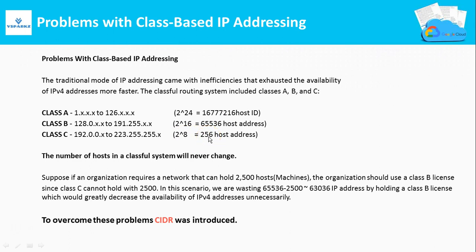For example, suppose an organization requires a network that can hold 2,500 hosts. The organization must use a Class B license because Class C can hold only 256 hosts. In this scenario we are wasting around 63,000 IP addresses by holding a Class B license, which greatly decreases the availability of IPv4 addresses unnecessarily.